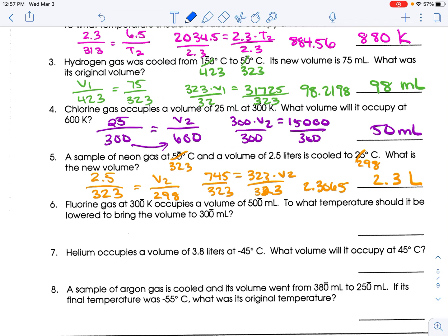We're in Kelvin, so that's good. So original volume is 500 milliliters, 300 Kelvin. 300 milliliters, I don't know, Kelvin. So 500 T2 equals 300 times 300 is 90,000 divided by 500 is 180.